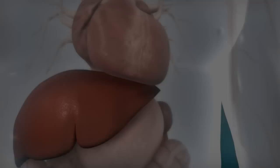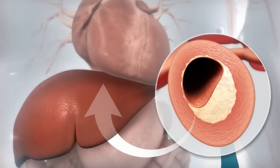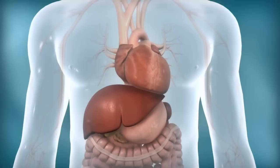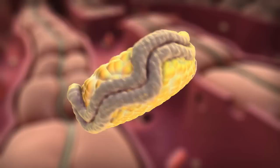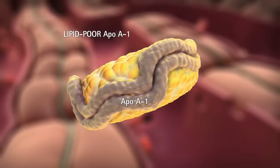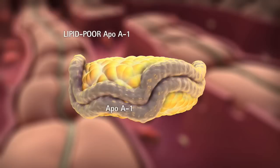Reverse cholesterol transport is a pathway for plaque reduction. The key mediator of this process is HDL, a particle that transports cholesterol. Its production starts in the intestines and the liver, where lipid-poor APO A1 is secreted and released into plasma. APO A1 is largely responsible for the anti-atherosclerotic properties of HDL, makes up 70% of the protein on HDL, and is found on virtually every HDL particle.